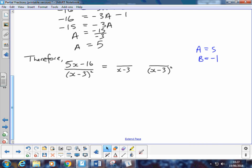So again, we're going to have an issue with our sign here. If A is 5, that A over (x - 3) becomes 5 over (x - 3), plus negative 1 over (x - 3) squared. I'll just make that a minus, and 1 over (x - 3) all squared. And that's how we deal with our repeated linear factor.